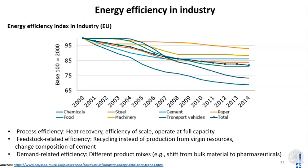There is also demand-related efficiency — maybe the structure of the sector changes as a whole. For example, if you go from bulk materials to pharmaceuticals, the overall energy efficiency of the chemical sector will go up and the energy consumption will go down per value added.